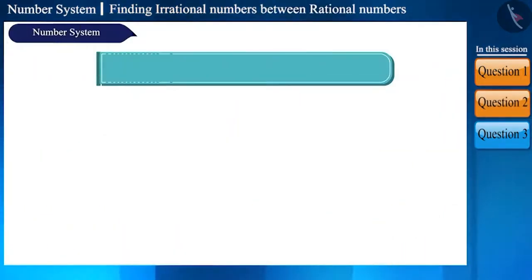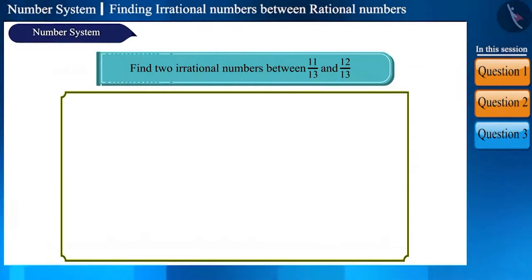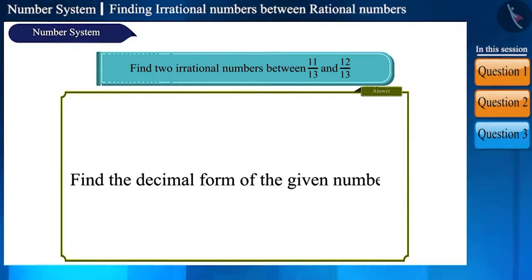Now, let's take the next question. Find two irrational numbers between 11 by 13 and 12 by 13. How will you answer this question? Here, first we will write the decimal forms of these rational numbers and then we will write two irrational numbers accordingly.